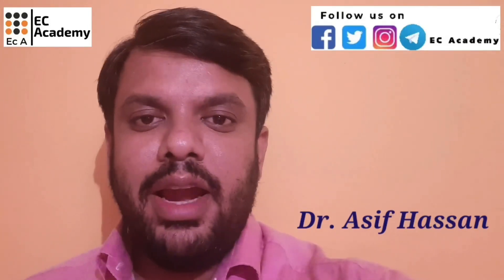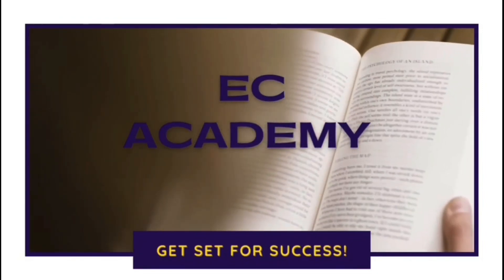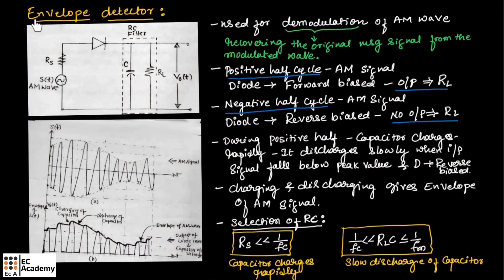Hello friends, welcome to ESA Academy. In this lecture, let us understand envelope detector. Envelope detector is the circuit that is used for demodulation of AM signal. Demodulation is a process of recovering the original message signal from the modulated wave at the receiver end.